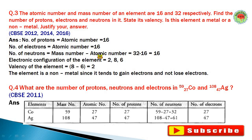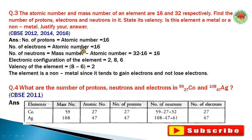Question number three: The atomic number and mass number of an element are 16 and 32 respectively. Find the number of protons, electrons, and neutrons in it. Number of protons equals atomic number, so protons = 16. Number of electrons also equals atomic number, so electrons = 16.